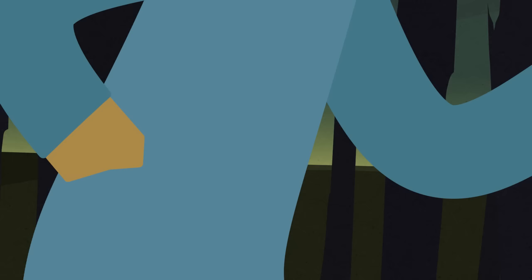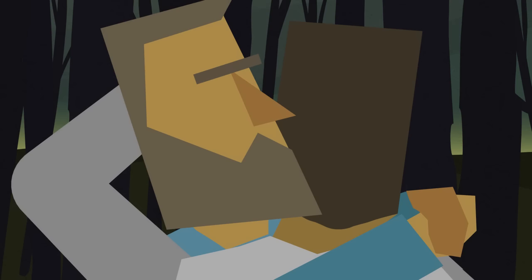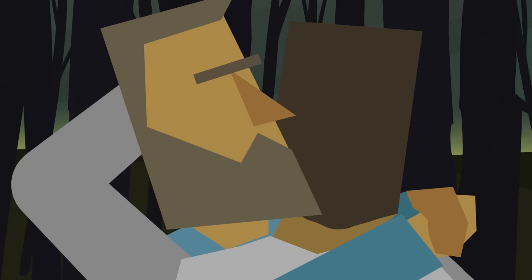When the stranger saw that Jacob wasn't going to give up, he touched Jacob's hip. And that simple touch pulled Jacob's hip out of socket, causing him to limp. Then the man said, let me go.